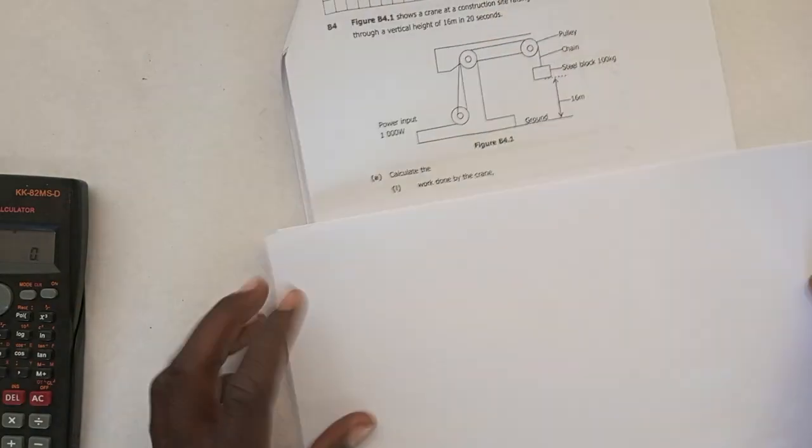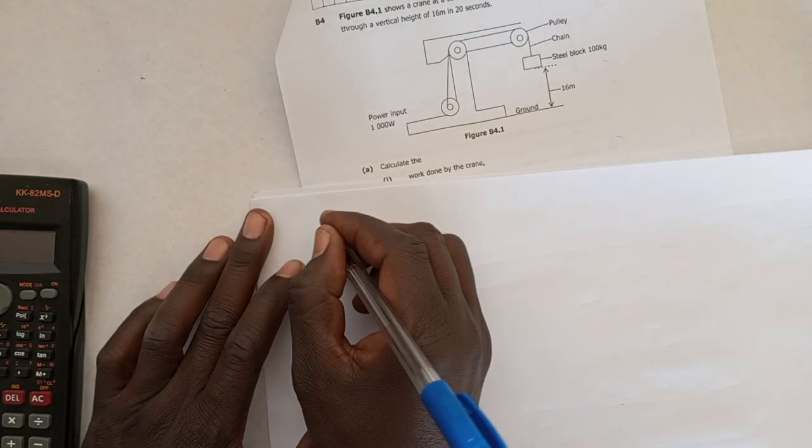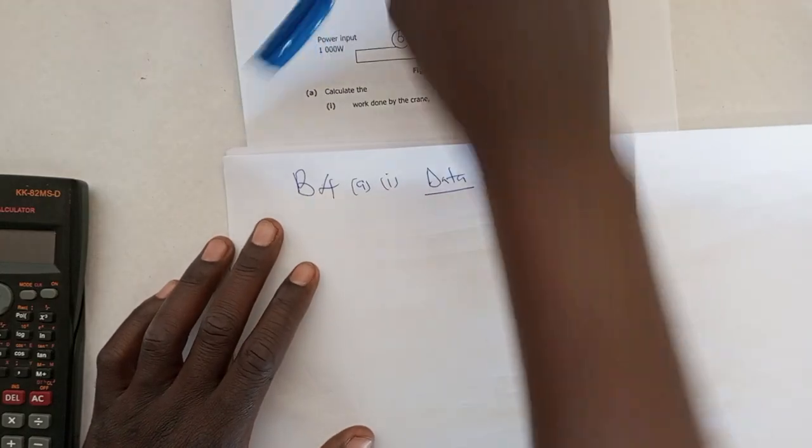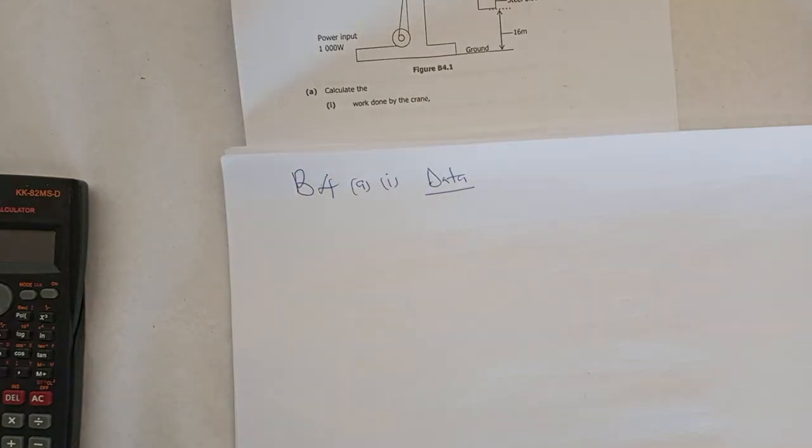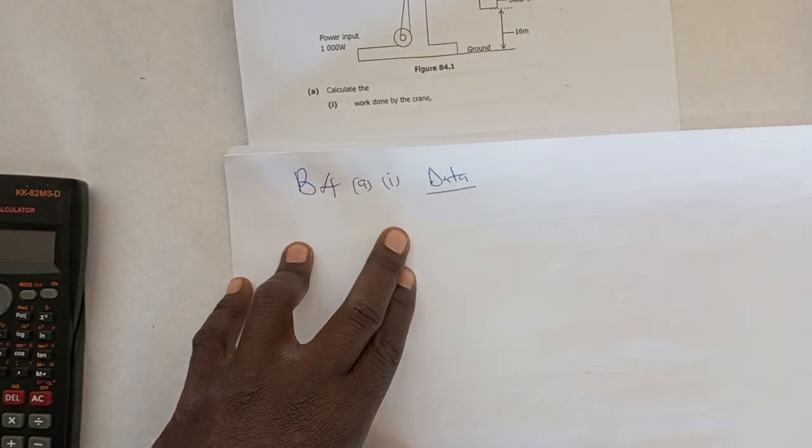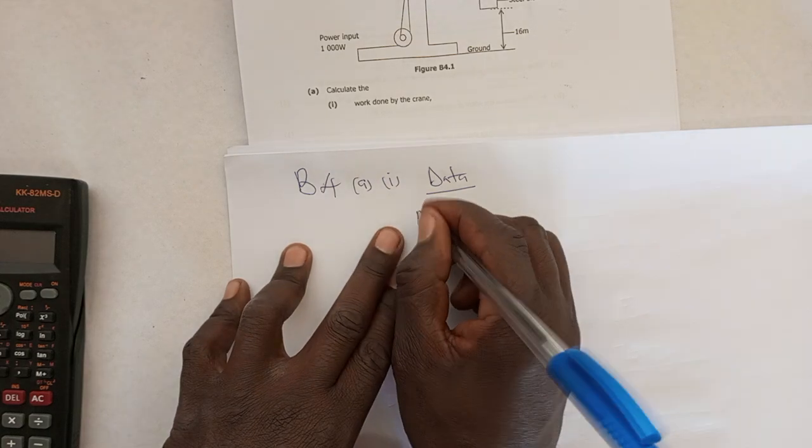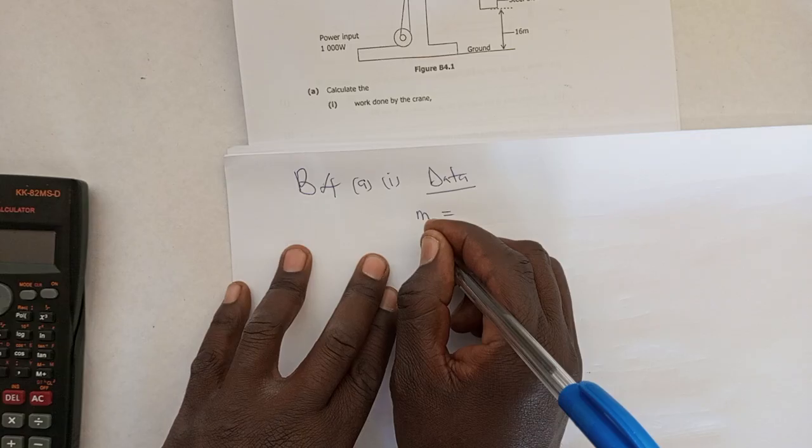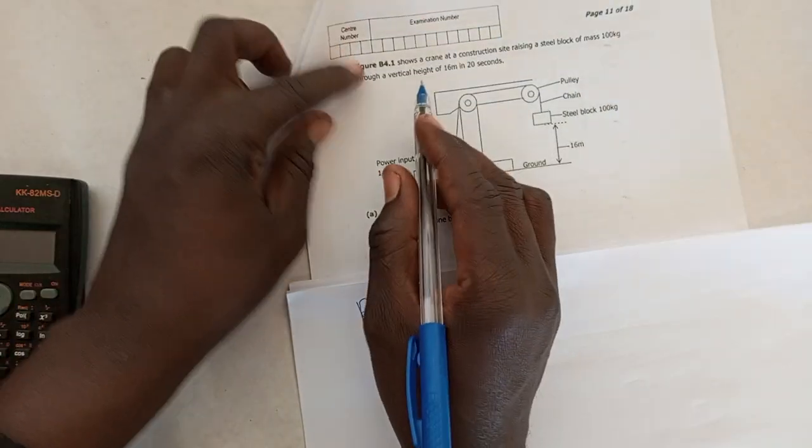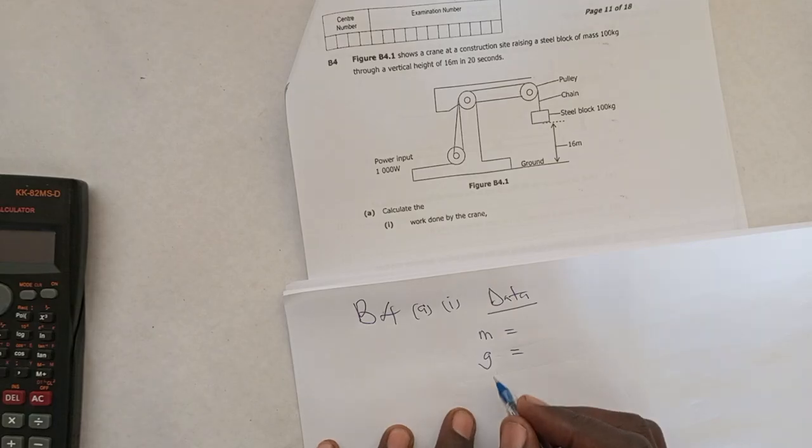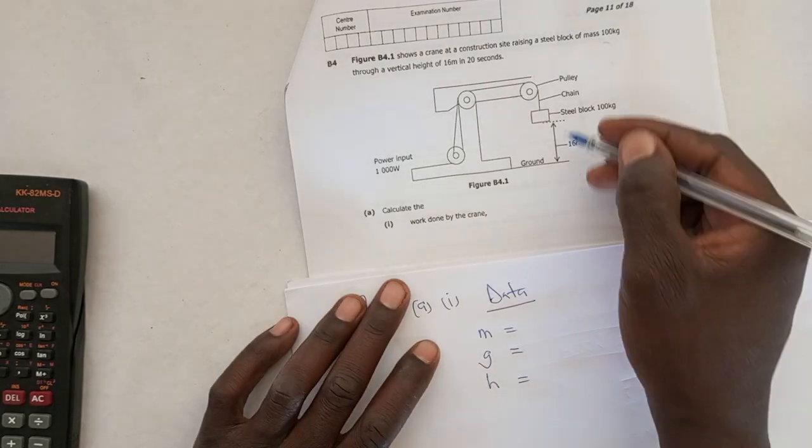So here we're going to write the data. This is question B4A. We can find the force because we have the mass there. First of all, we have the mass. And since we are told it has to do with vertical height, G must be considered. And also the distance. In this case, the distance is H, which is height.